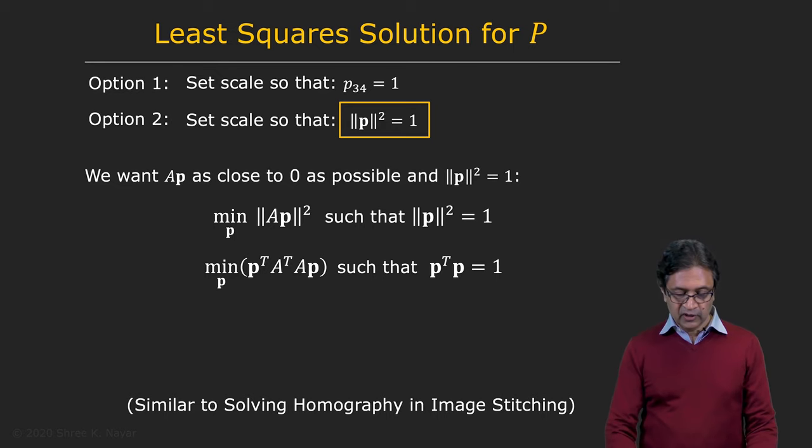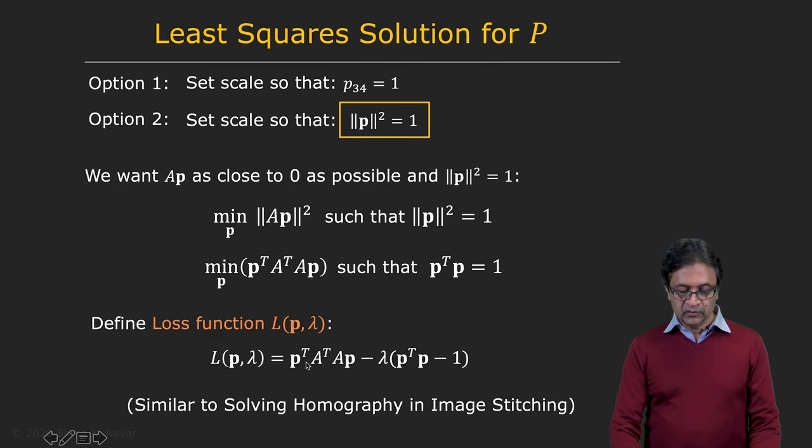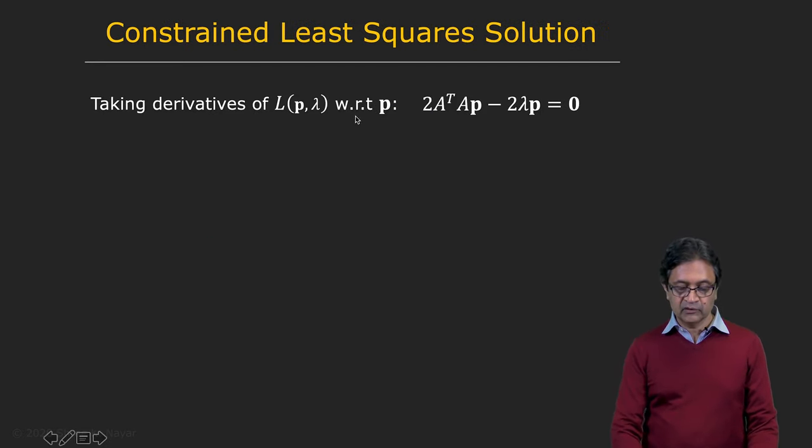So we use exactly the same approach. We can express A*P squared as P transpose A transpose A*P and P squared as P transpose P. So we can now define a loss function L, which is P transpose A transpose A*P minus lambda multiplier times P transpose P minus one. That's your loss function. And we want to minimize this loss function. In other words, we want to find the P that minimizes L. And how do we do that? We find the derivative of L with respect to P and set that equal to zero. And you get this simple expression right here.